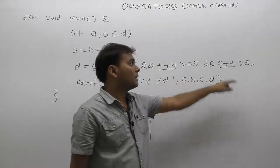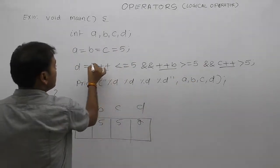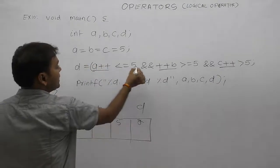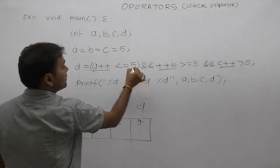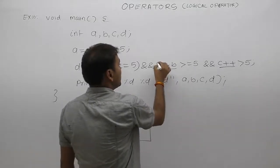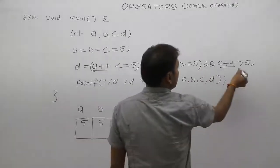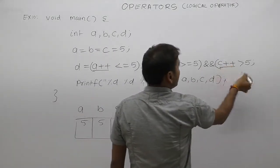Three operators with the same priority: less than equal. First operand for less than equal is a++. Second operand is 5. What is the first operand for greater than equal? Again, ++b. What is the second operand? 5. What is the first operand for greater than? c++. What is the second operand? 5.